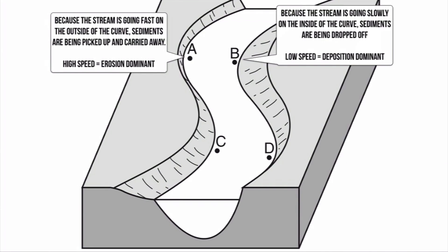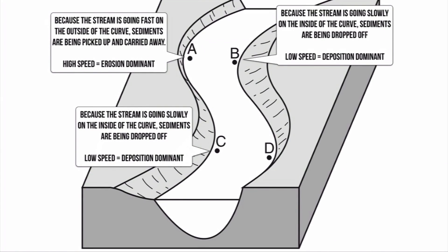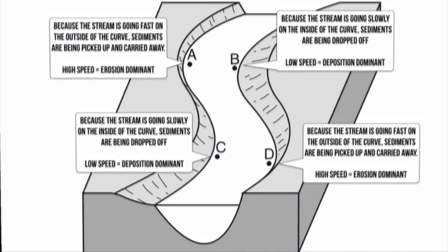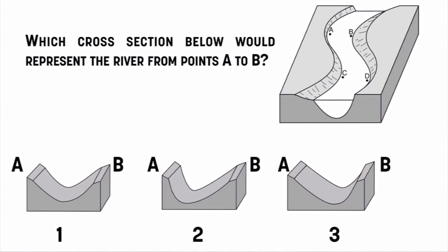In the stream example, it reverses at the next bend — at C there's the inside of the curve with more deposition, and at D the outside of the curve has more erosion. If we take a cross-section from A to B, we know there's more erosion at A and more deposition at B. What would that do to the actual shape of the stream channel? Take a look at the three choices and select the best one.